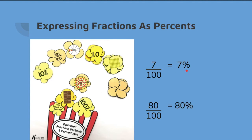which is equivalent to 7%, and 80 over 100 is simply equal to 80%. But what if the fraction has a denominator which is not equal to 100, either less than or greater than 100? What do we do now?